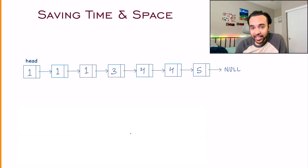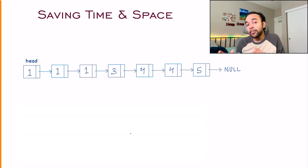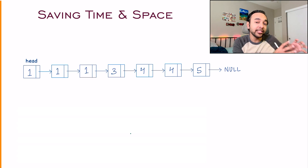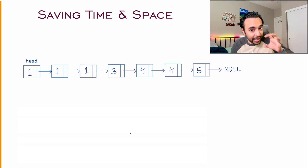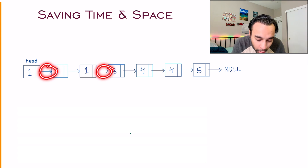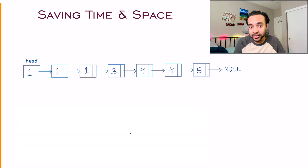You look at this list once again, and this time you want to find an efficient solution. You also want to save up on memory. You were taking up the extra space of a map, but this time you want to avoid it. It means that you will have to play around with all of these pointers.